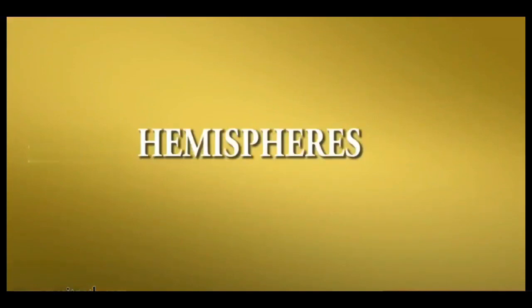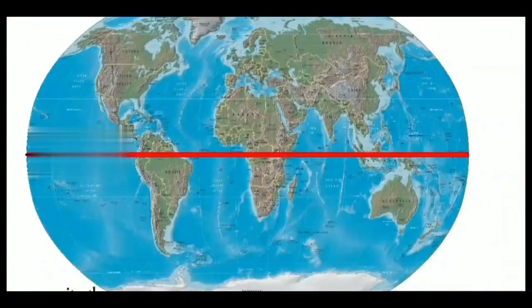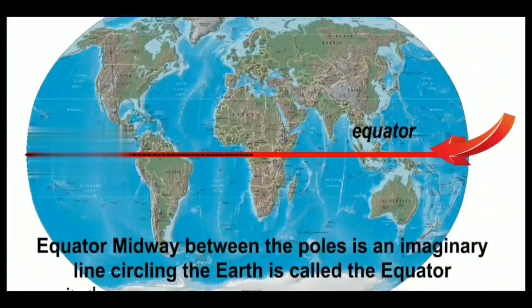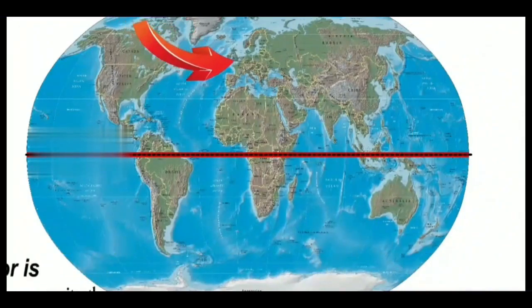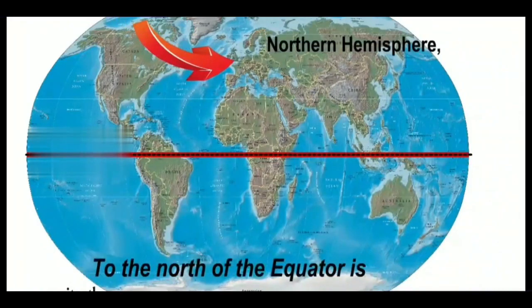Hemispheres. Equator midway between the poles is an imaginary line. Circling the earth is called the equator. Here we can see that middle line that is called the equator. To the north of the equator is called the northern hemisphere.